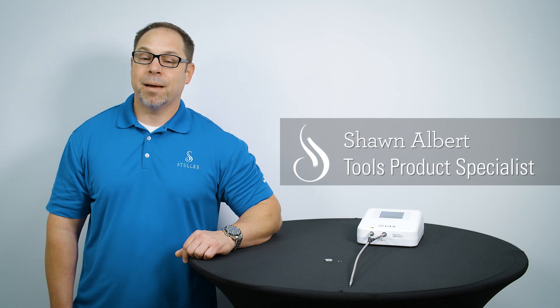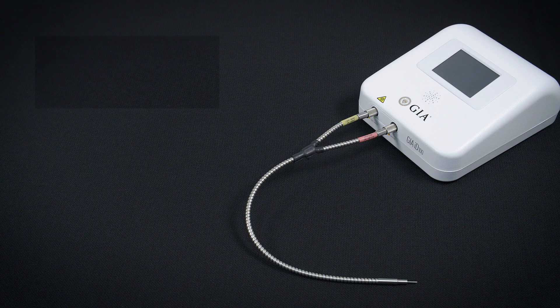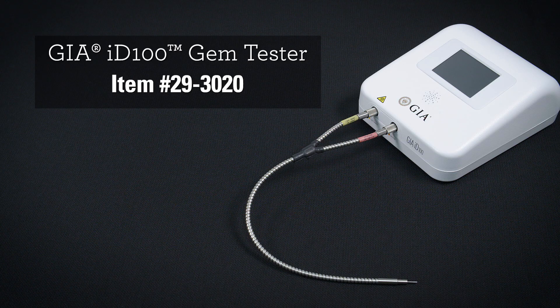If you're looking for a tool to screen for lab-grown diamonds, the GIA iD100 can identify colorless to near colorless natural diamonds. Let me show you how it works.